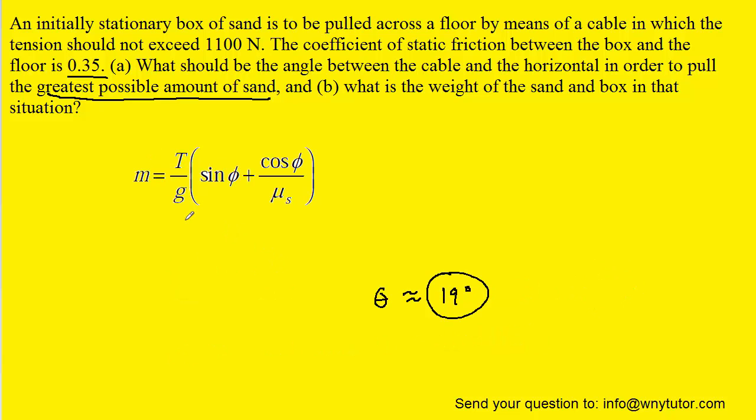For part B of the question, recall that we had the equation of mass in terms of the angle. So we just have to plug in all the known values. We now have the angle, we have mu sub s, g is 9.8, and the tension T was given to us in the question. And when we compute this on our calculator, we get a mass of approximately 340 kilograms.